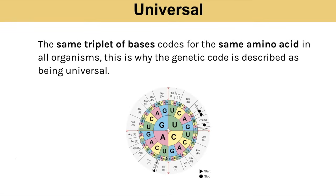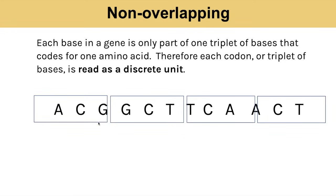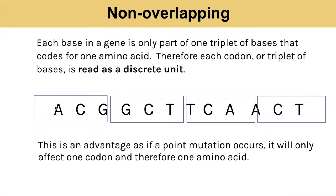Universal means that the same triplet of bases codes for the same amino acid in all organisms. Non-overlapping means that each base is only involved in one triplet — so a base A is only in one triplet, and we don't have it also making up a second triplet of bases. Every codon or triplet of bases is read as a discrete unit. This is an advantage because if a point mutation occurs it will only affect one codon and therefore one amino acid, minimising any potential harm.